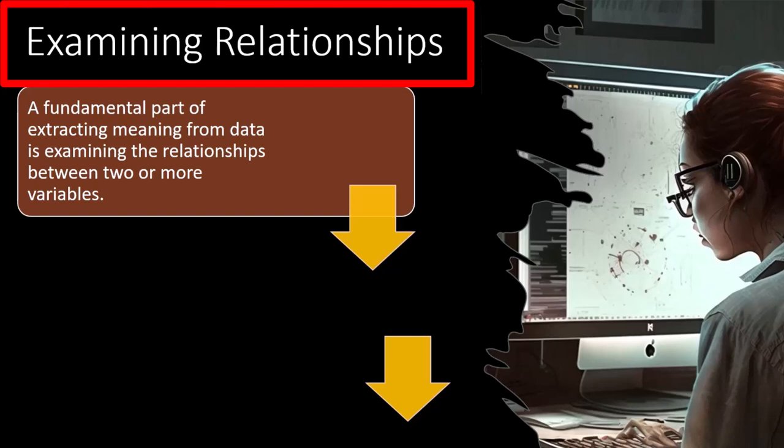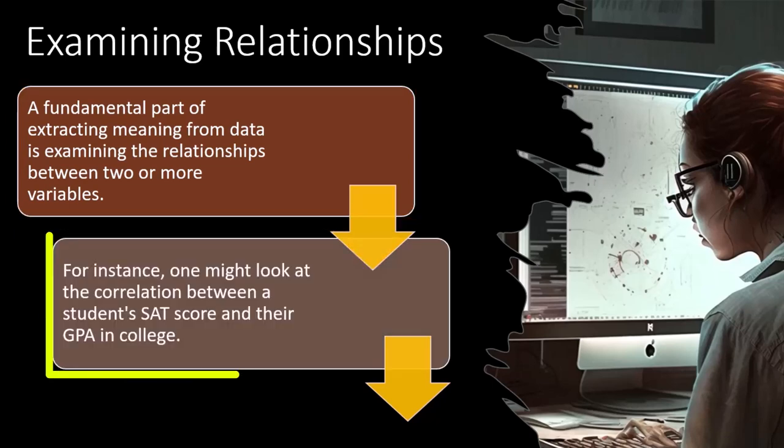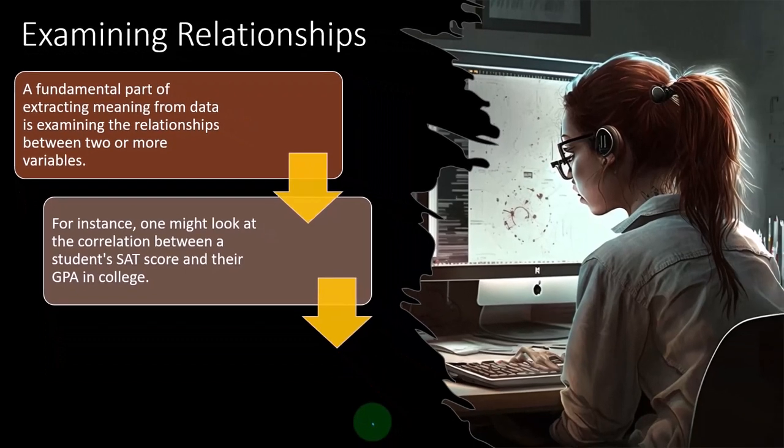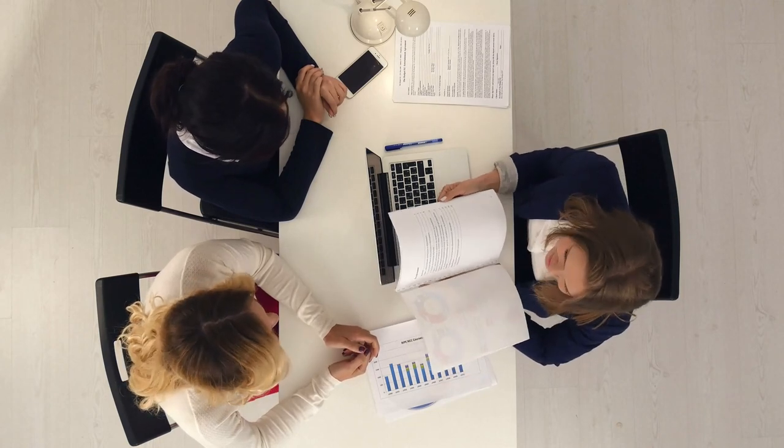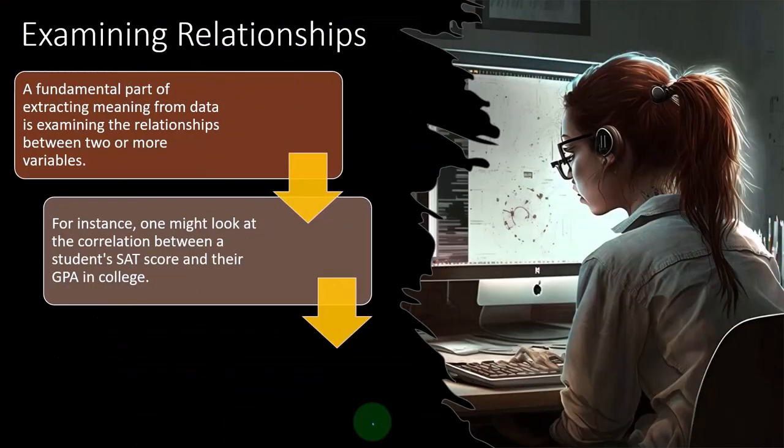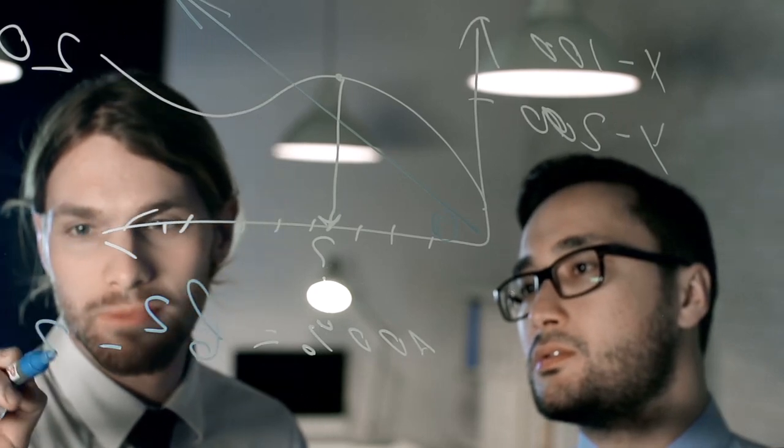So examining relationships. A fundamental part of extracting meaning from data is examining the relationship between two or more variables. For instance, one might look at the correlation between a student's SAT score and their GPA in college. So this is that example where we can say, hey, look, I know all the SAT scores, test scores taken before college. And we can say, is there a relationship between the SAT scores? And we're not talking about the SAT scores and the people that get into college, we're talking about the SAT scores and the people that are in college. So they're in college, they have the SAT scores before going into college. So now we can plot if we wanted to, the relationship between the SAT scores they had, and their GPA, the performance they had in college, to see if the SAT scores had an impact.